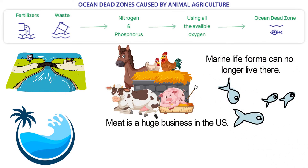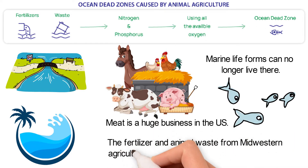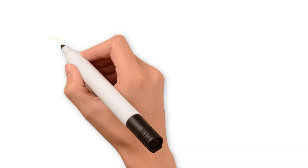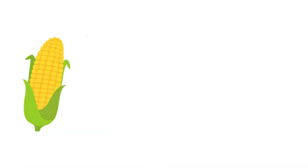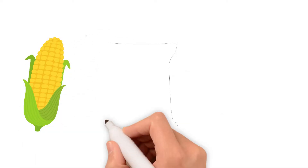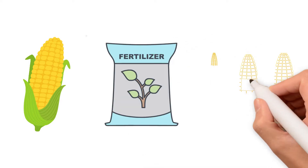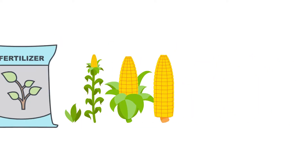The Midwest is a prime location for large farms. Unfortunately, the fertilizer and animal waste from Midwestern agriculture heads straight to the Mississippi River. From there, the river flows into the Gulf of Mexico. In order to produce enough corn to feed all this livestock, farmers need to use a lot of fertilizer. The same nutrients that help the corn to grow also make algae grow in the ocean.